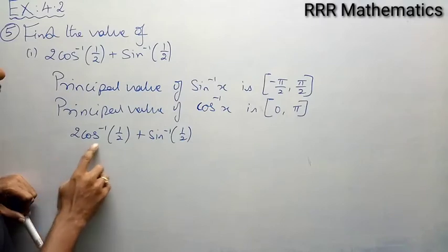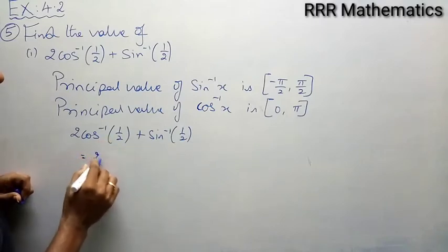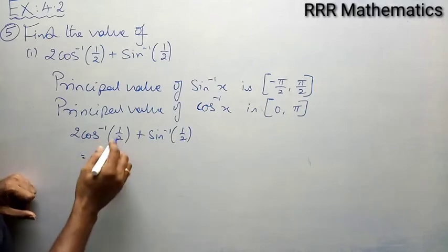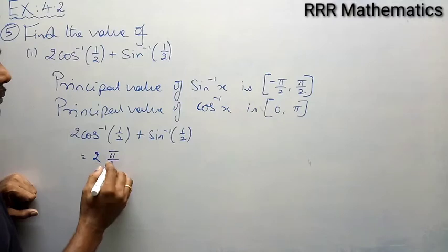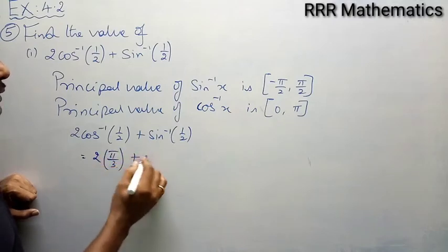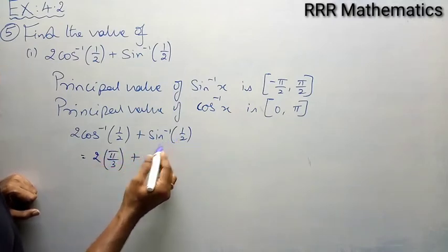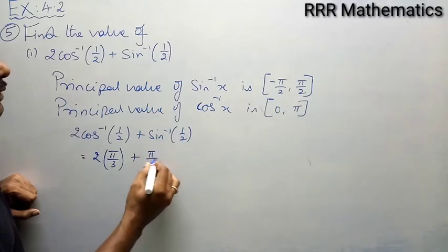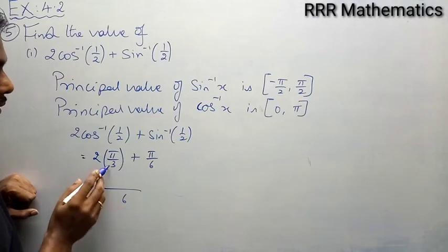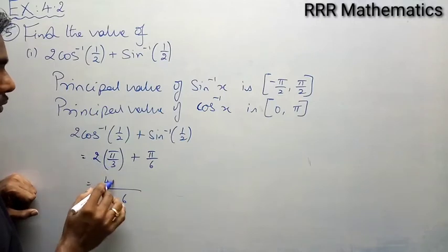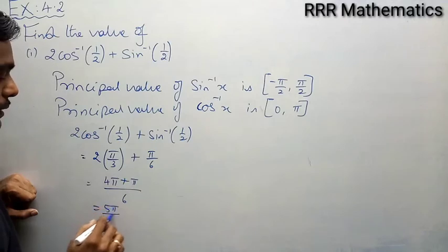We have 2 cos inverse of half plus sin inverse of half. For 2 cos inverse of half: 1 by 2 will come in cosine at 60 degrees, so cos inverse of half equals pi by 3. For sin inverse of half: 1 by 2 will come in sine as 30 degrees, so sin inverse of half equals pi by 6. When we take LCM of 6: 2 times pi by 3 plus pi by 6 gives us 4 pi plus pi, which equals 5 pi by 6.